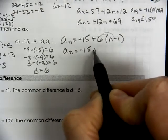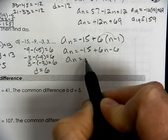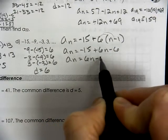So we can clean that up a bit. Distribute. So we have 6n minus 21.